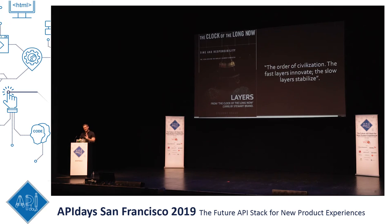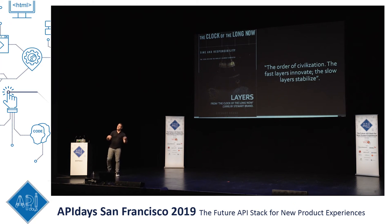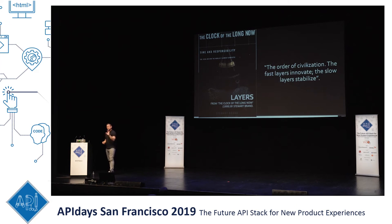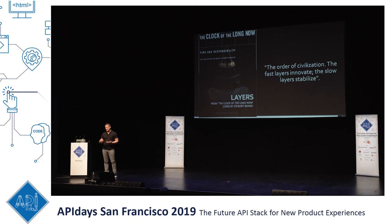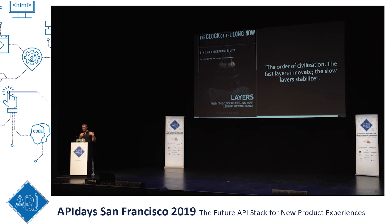One layer is not more important than another and it turns out that all layers are important for a well-functioning system. Each layer has its place. Imagine if something as important as domestic and foreign policy changed on a whim — that would not be a good thing. Likewise if you're trying to innovate at the speed of bureaucratic consensus, that's also probably not ideal. All layers are necessary. As Stewart says in his book, the fast layers learn, the slow remembers.